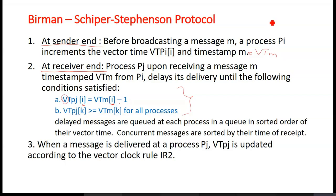So when the message is delivered at process Pj, VTPj which is the vector clock of Pj is updated according to the vector clock rule IR2. Rule 1 is for events of similar process. Rule 2 for message sending processes. That is what they point here.